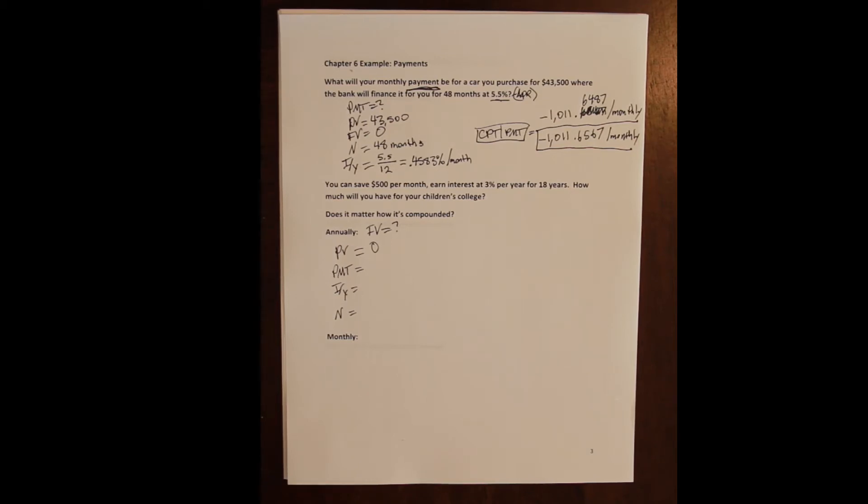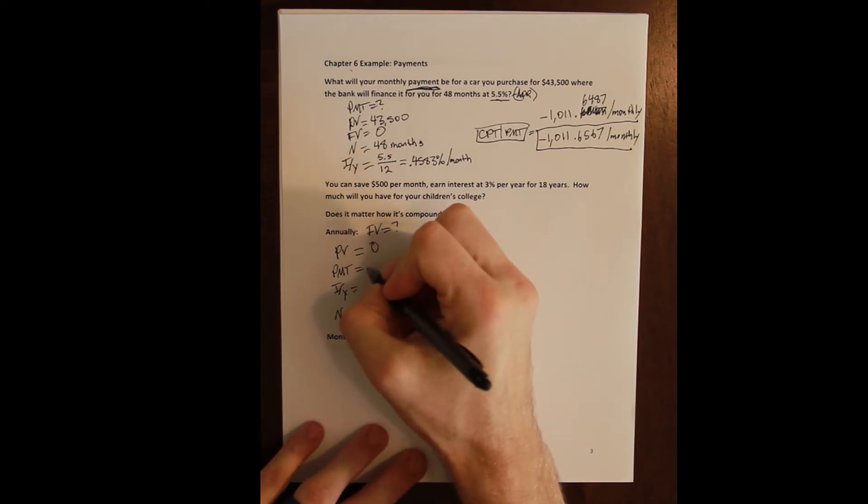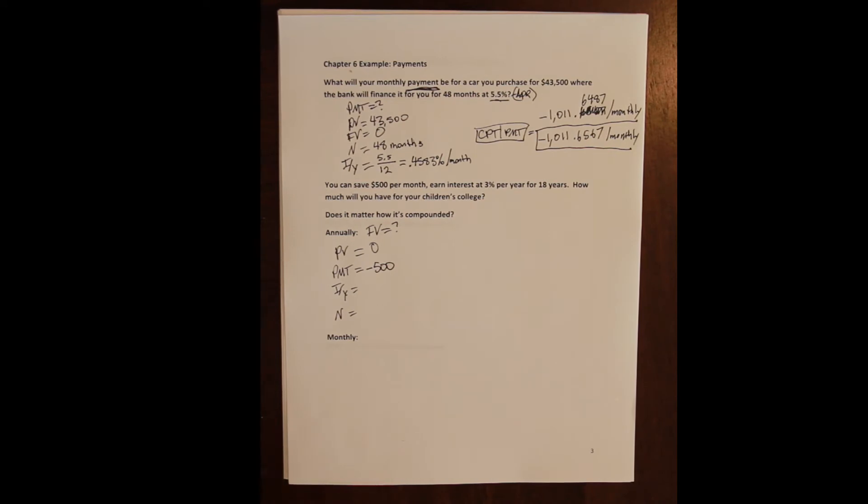Here again we need to ask ourselves what the story is, and the story is that I am contributing to an account. So this is going to tell me what my cash inflows and outflows are. Contributions to this investment is a cash outflow—that is money leaving my savings account, checking account, whatever it is, and going into this investment account.